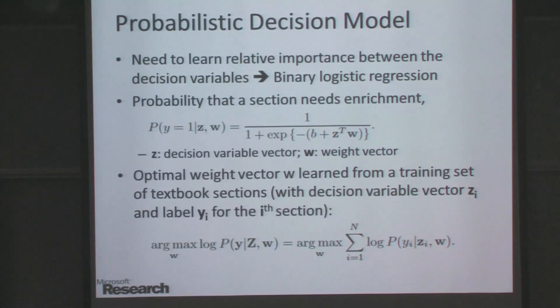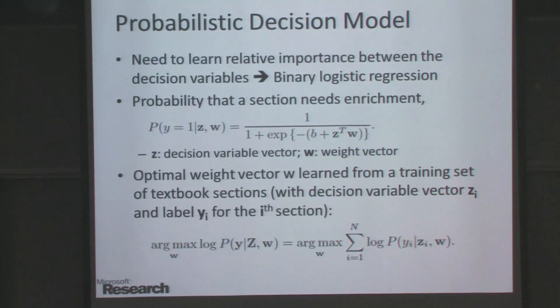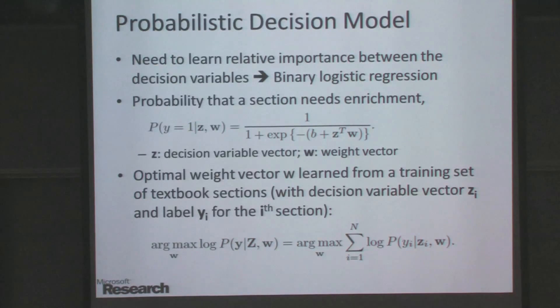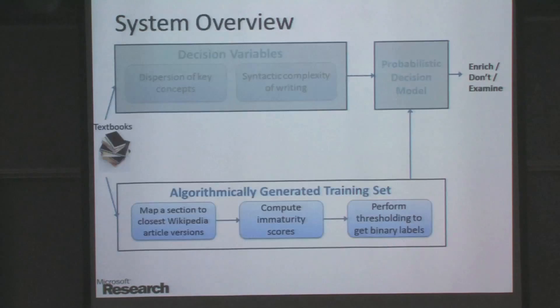We quantize the probabilities based on their distribution. From this quantization, we get whether to enrich a section or not enrich a section, or for the values in between we say that we are not sure.